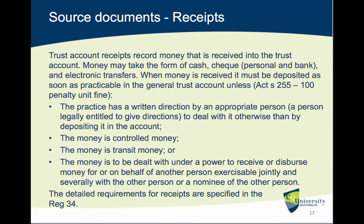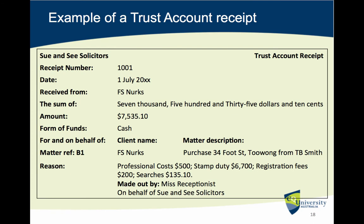The detailed requirements for receipts are specified in Regulation 34. I've included in the PowerPoint slides an example of a trust account receipt. When you look at that, you'll see various things listed: the name of the solicitor, the receipt number, the date, who it was received from, the amount in words and figures, the form in which the funds were received — for example cash, telegraphic transfer or cheque — the particular client matter to which it relates, the reason for the money, and the name of the person who completed the receipt.